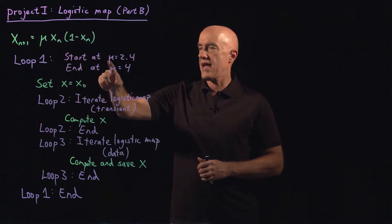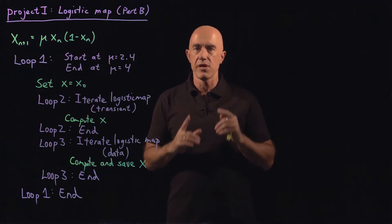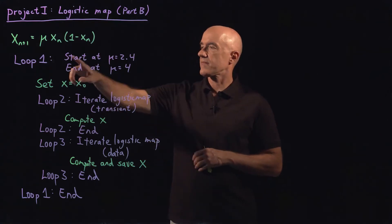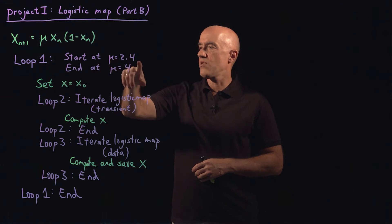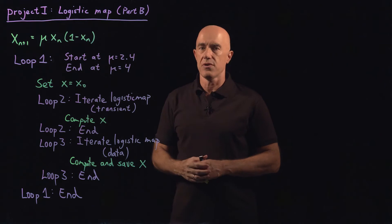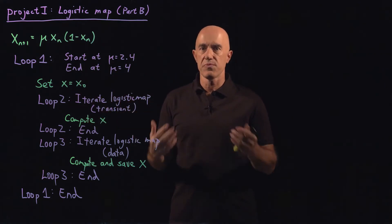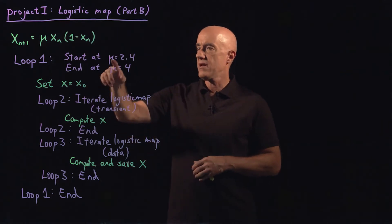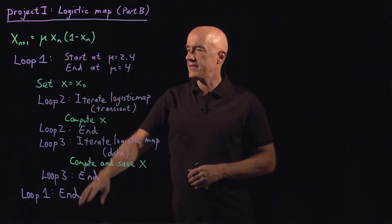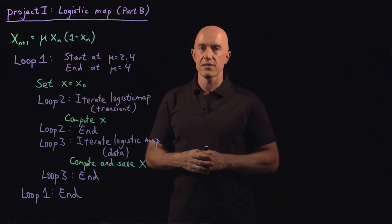You're going to start at mu equals 2.4. Remember, between 2.4 and 3 you will have a fixed point for the logistic map. So you start at 2.4, loop through mu, and end at mu equals 4. You'll compute the bifurcation diagram between mu equals 2.4 and mu equals 4. Inside this outer loop, at the beginning you set x equal to x naught.